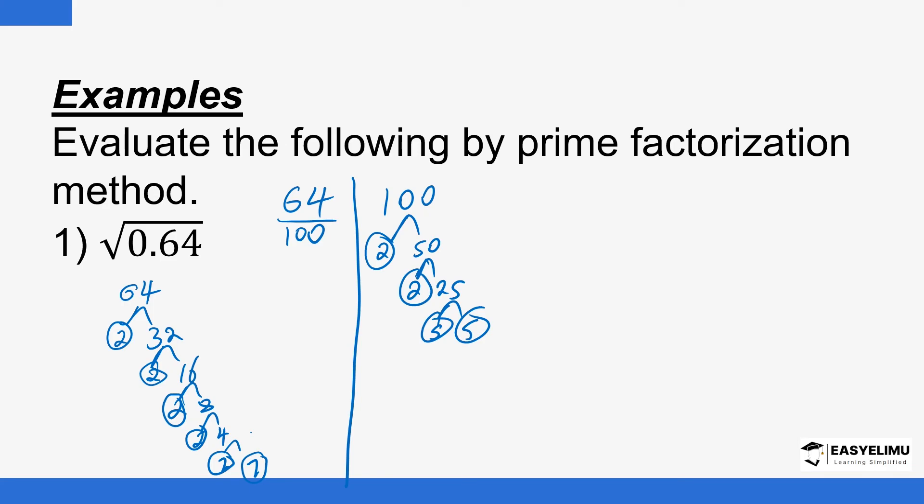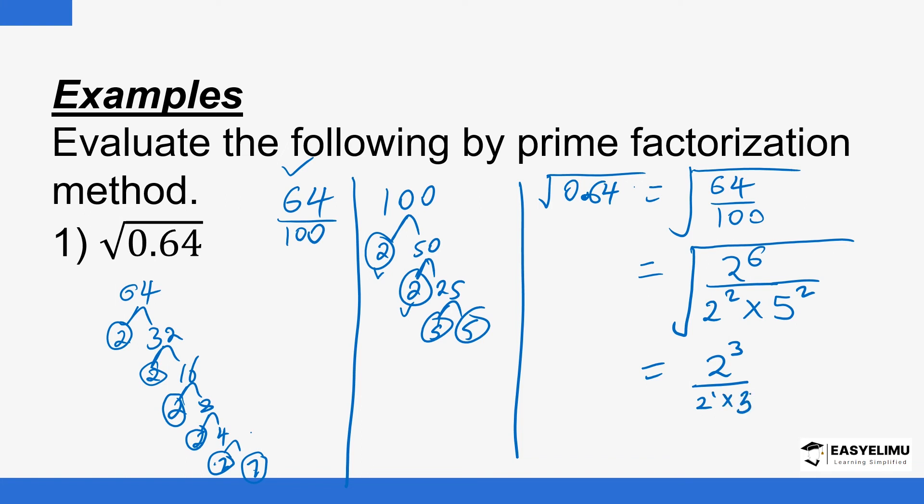Then now, we have the square root of 0.64. So this is going to be the square root of 64 divided by 100. So 64 again expressed as a product of its prime factors in power form is going to be the square root of 2 power 6 divided by 100, which is 2 power 2 times 5 power 2. So you are just going to divide the powers by 2. So we have 2 power 3 up there and down here we have 2 power 1 times 5 power 1.